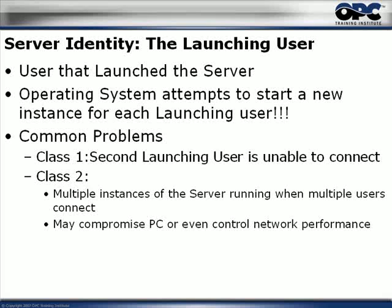With those single-instance servers, the first user is able to connect but the second user is not, because the operating system tries to start a new instance and the OPC server says it already has one running and refuses to start another. The second person will be refused. As soon as the first person terminates their connection, the second person can get in — but if the first person reconnects, they'll be refused because the second person now holds the connection.